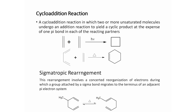The third category is sigmatropic rearrangement — a concerted rearrangement reaction involving reorganization of electrons, during which a group attached by a sigma bond migrates to the terminus of an adjacent pi electron system. An example is 3-methyl-1,5-hexadiene undergoing rearrangement to give 1-methyl-1,5-hexadiene, where the sigma bond migrates over the pi system from one position to another.